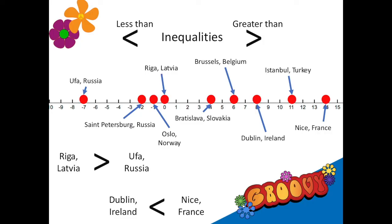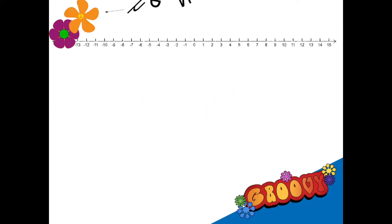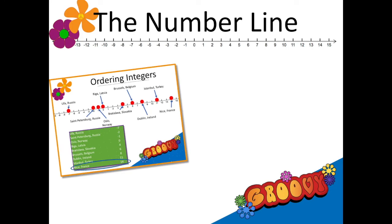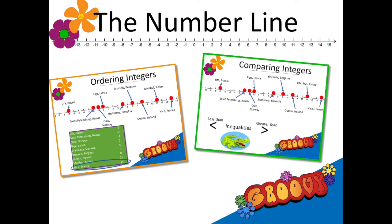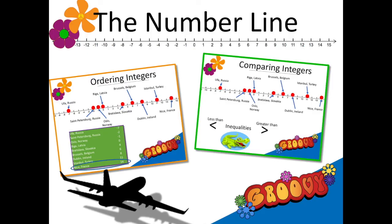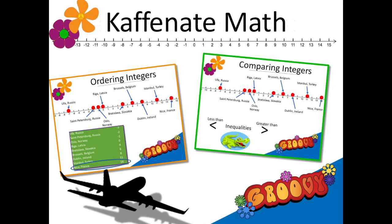I think we'll stop there for now. The number line is a great tool for ordering integers, comparing integers, and figuring out where I should go on my next vacation. Thanks for the help today — I'll see you next time!